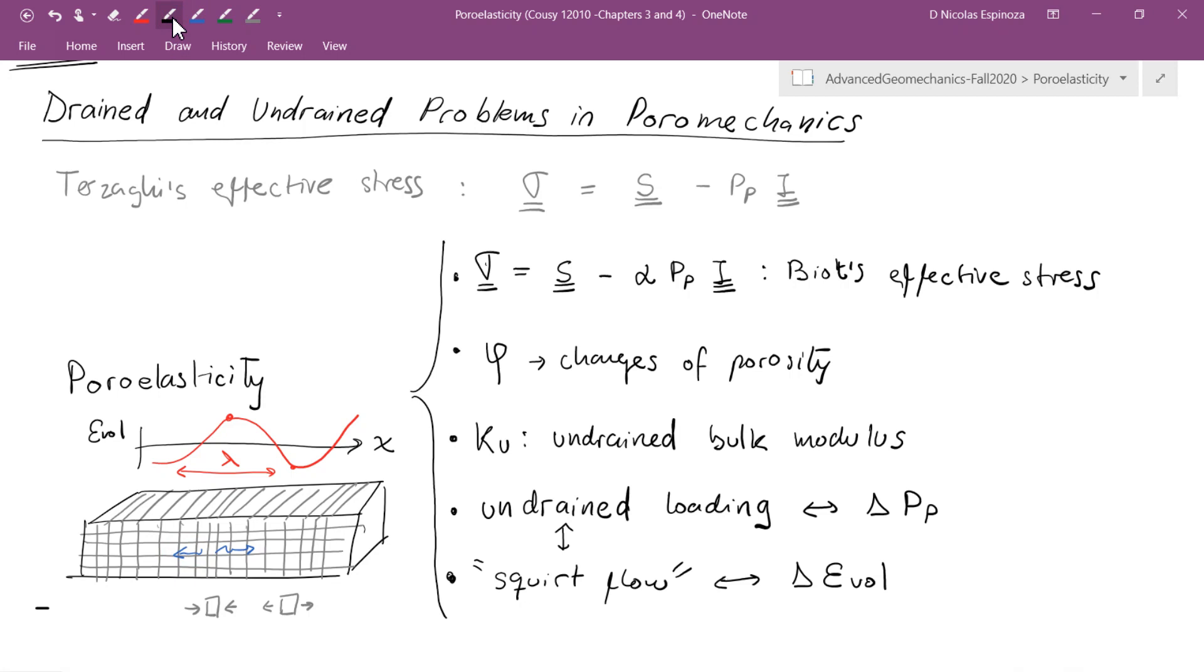This type of squirt flow is going to cause attenuation of these waves and particularly we're talking about elastic waves and also is going to cause a dispersion of the waves. What is dispersion? Dispersion is a change of velocity with frequency.